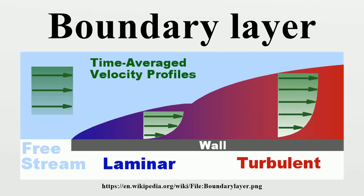In physics and fluid mechanics, a boundary layer is the layer of fluid in the immediate vicinity of a bounding surface where the effects of viscosity are significant. In the Earth's atmosphere, the atmospheric boundary layer is the air layer near the ground affected by diurnal heat, moisture or momentum transfer to or from the surface. On an aircraft wing, the boundary layer is the part of the flow close to the wing, where viscous forces distort the surrounding non-viscous flow.